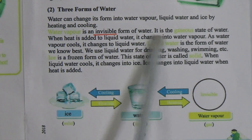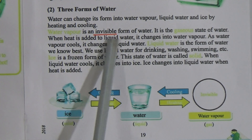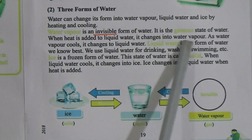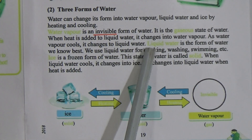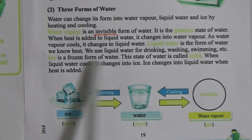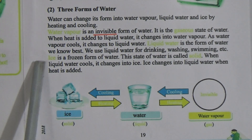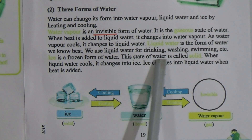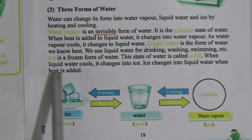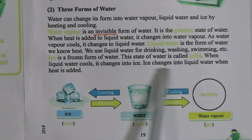When heat is added to liquid water, it changes into water vapor. As water vapor cools, it changes back into liquid water. Liquid water is used for drinking, washing, swimming, etc. Ice is the frozen form of water — that means the solid form of water. This state of water is called solid.